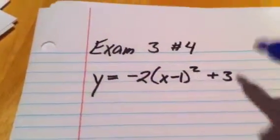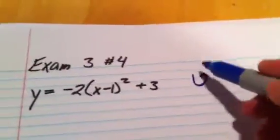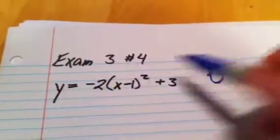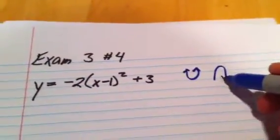So we see it's an x squared, so we're expecting a parabola, one of these guys, and because of that negative, we're kind of expecting them to be upside down.